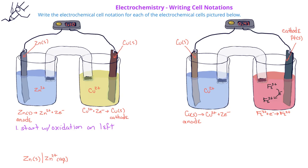We then indicate the salt bridge with a double vertical line. We then write the reduction half-cell, or the cathode half-cell, so that we have copper 2 plus aqueous, and then a single vertical line, and then the copper metal.